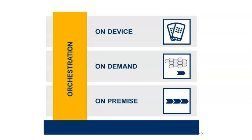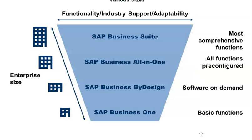When it comes to offerings, SAP has on-premise, on-demand, and on-device, and cloud offerings as well. In terms of functionality, we have SAP Business Suite, SAP Business All-in-One, Business By Design, and Business One. Business Suite is for very large enterprises, Business All-in-One is for slightly smaller enterprises, Business By Design is for small businesses, and SAP Business One is for very small businesses — those with roughly 10 crore to 100 crore turnover — which can be afforded by small companies.